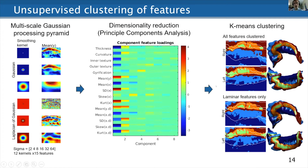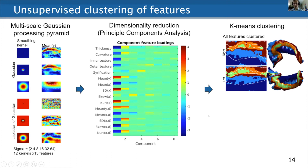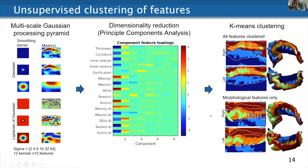We repeated this same analysis using only the subset of laminar features and saw something quite similar, which makes sense given that these subfields are typically defined in a laminar way. We also repeated it for morphological features only — things like thickness and gyrification — and again saw some of these boundaries in some of the same places.